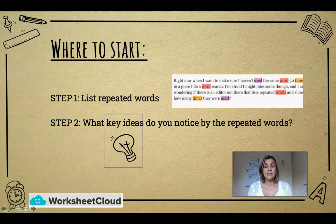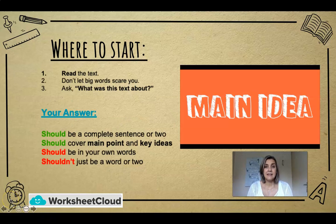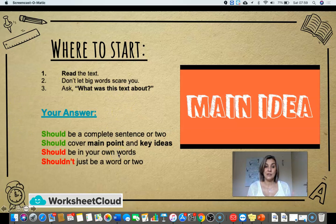We looked at repeated words — not words like 'the,' 'a,' 'an,' but words that are repeated often. Then we look at key ideas you notice from those repeated words and ask whether they are important. To start: number one, read the text. Number two, don't let big words scare you. Number three, ask what is this text about. Your answer should be a complete sentence or two, covering the main points and key ideas in your own words — not just a word or two, because that's not a summary.